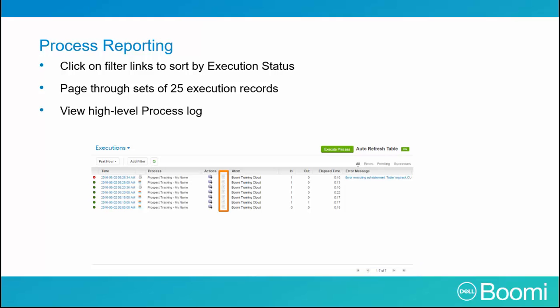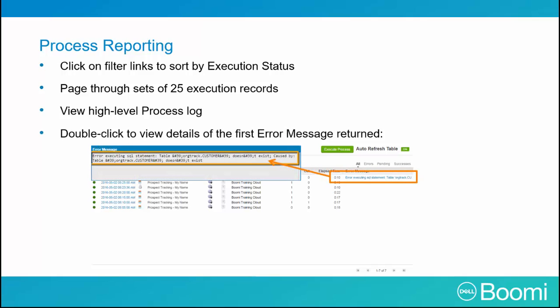You can view high-level process logs to see the state of each step kicked off for the document in a workflow. You can click the last column to view the details of the first error message returned, if any. The first error message refers to connectivity errors in the start shape or the first error that happens against your inbound document set.